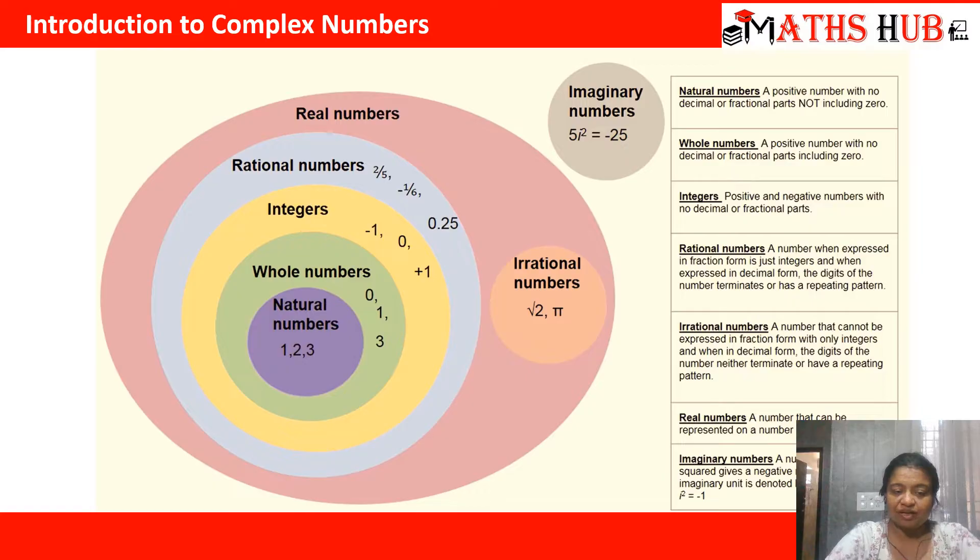If you check the number system, in the very beginning we had the natural numbers starting from 1, 2, 3. And we had the basic four operations: plus, minus, multiplication, and division. When we started with natural numbers, it was easy to add the numbers because when we added the numbers, we got a new number.